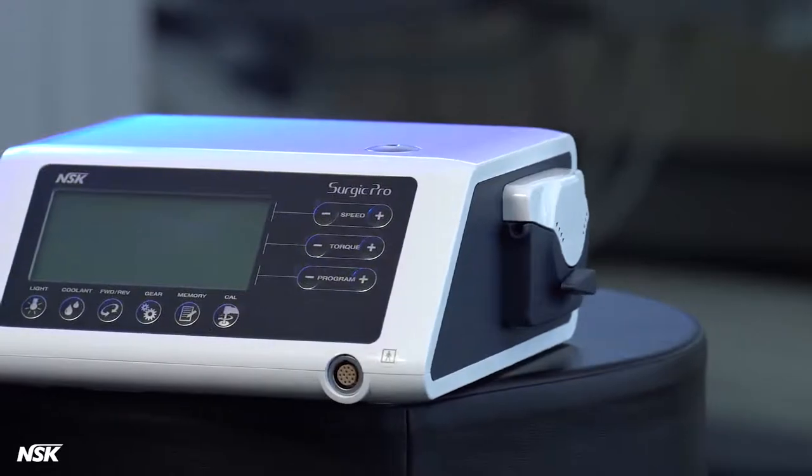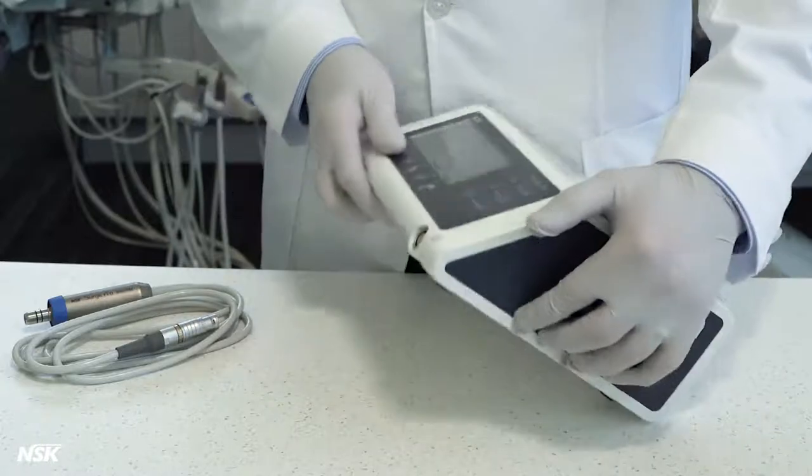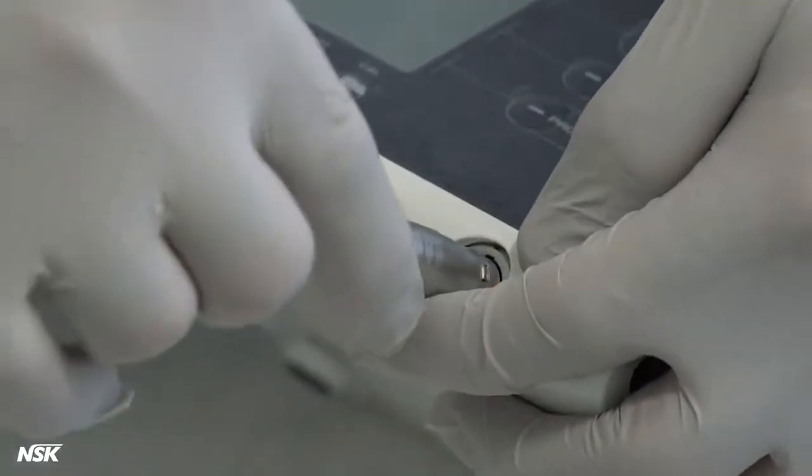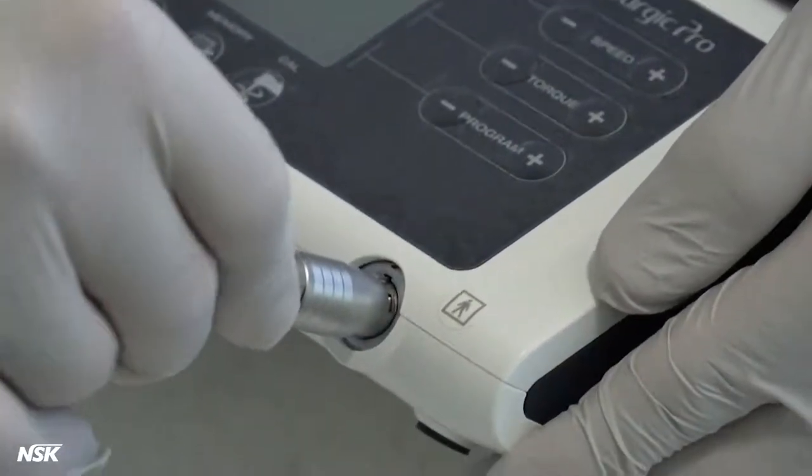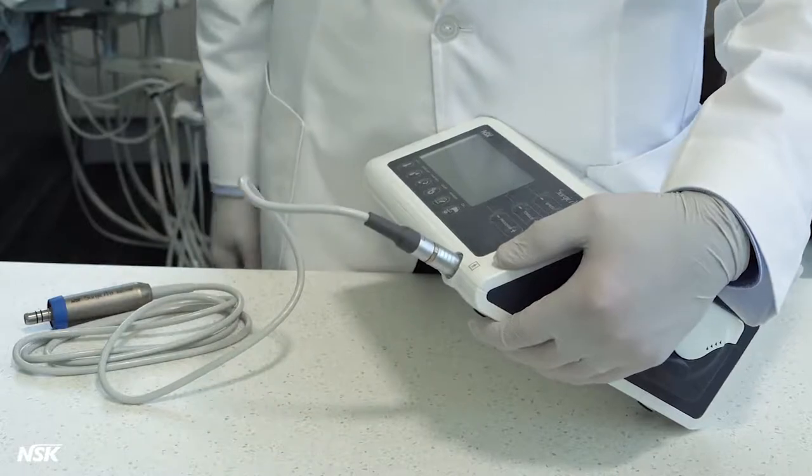Now let's move on to setting up your Surgic Pro. Installation: Connect the motor cord by aligning the marks on the cord connector and the connection on the control unit. Push in the connector until you hear a click. Slightly pull the cord to make sure it's locked in place.